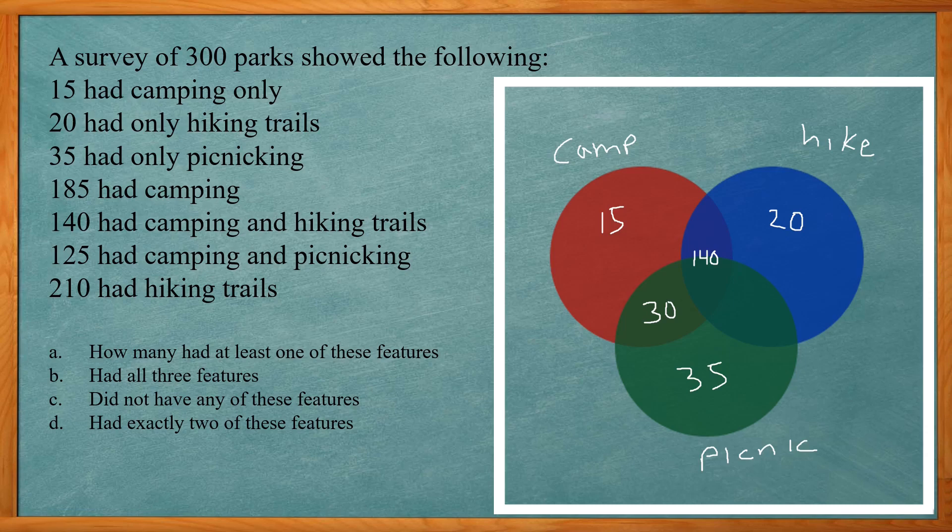If I look at the 125 had camping and picnicking, camping and picnic is the red and green and so far I know 30 for sure. So 125 minus the 30 would give me 95 that needs to be here.